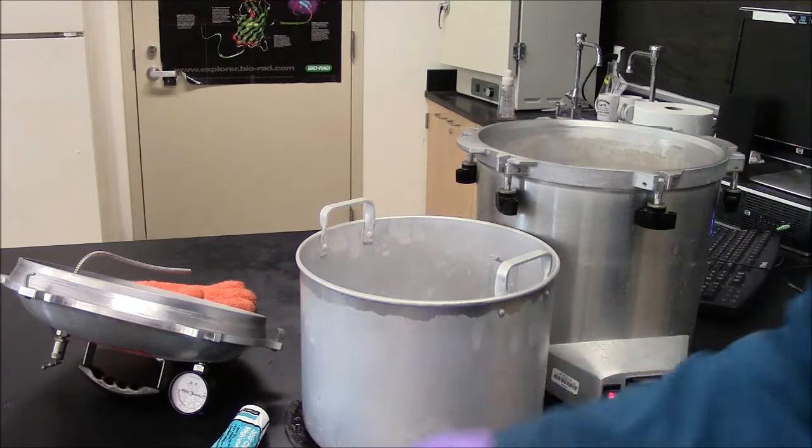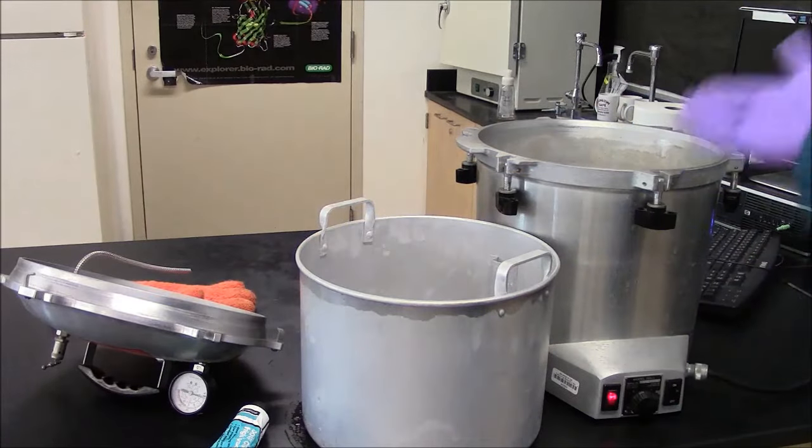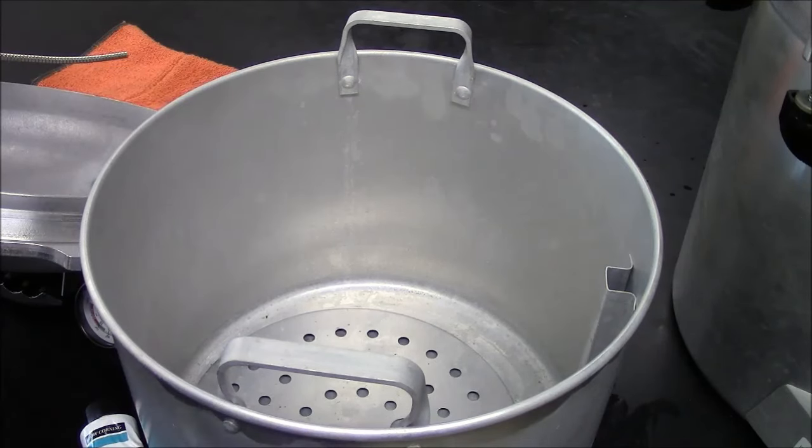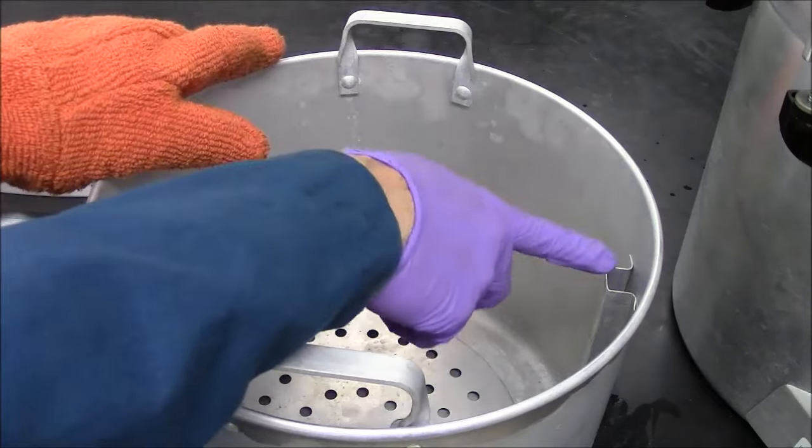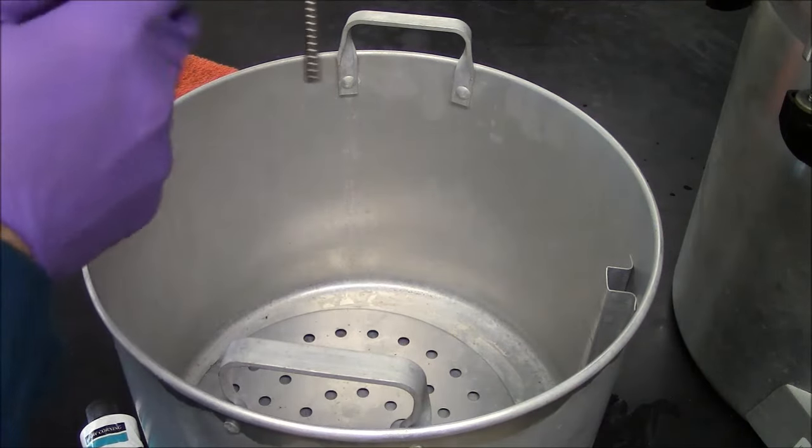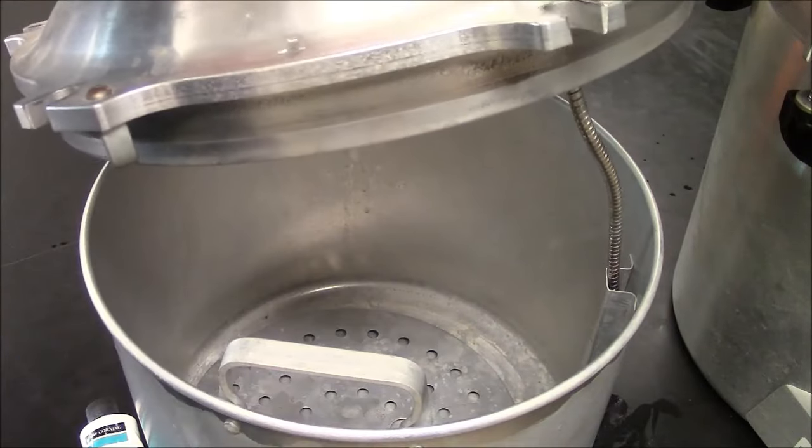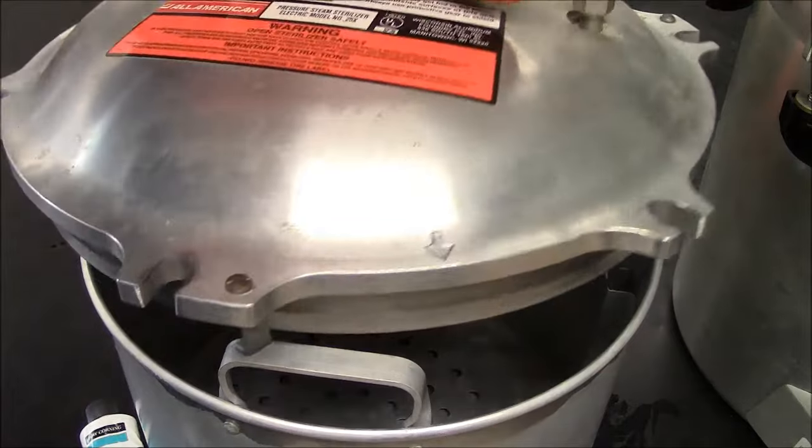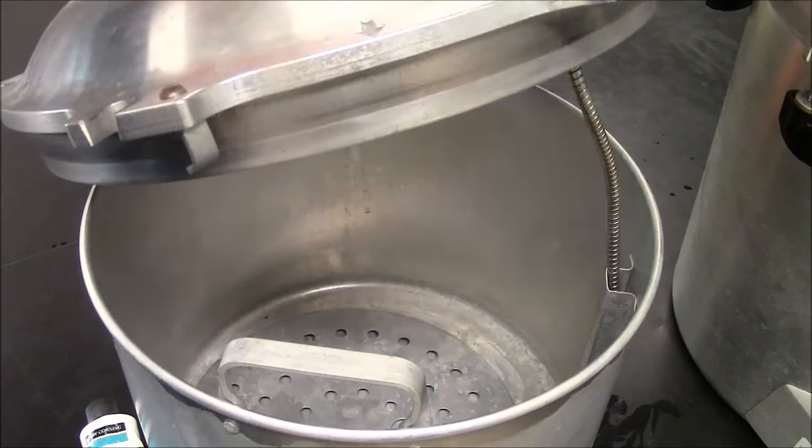Vacuum grease can be useful because you need a seal here so that the steam does not escape. The container for the materials has a little channel here on the side. The lid has a tube that fits in the channel. So when you assemble it you have to make it so this can fit in that slot there.